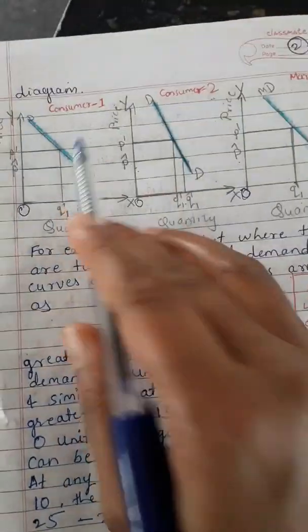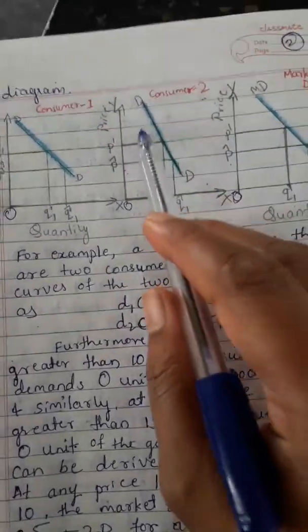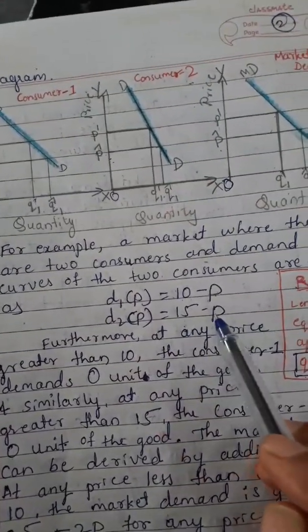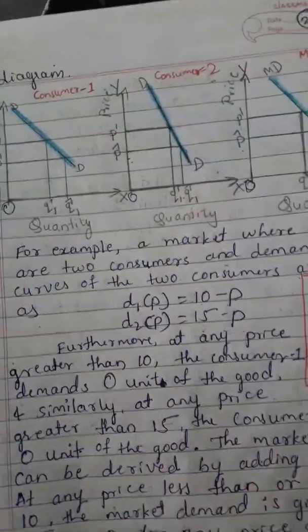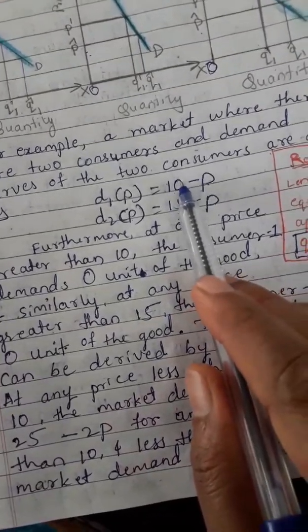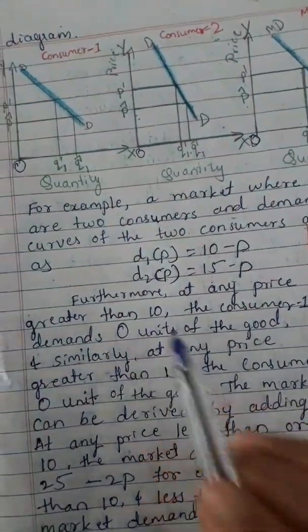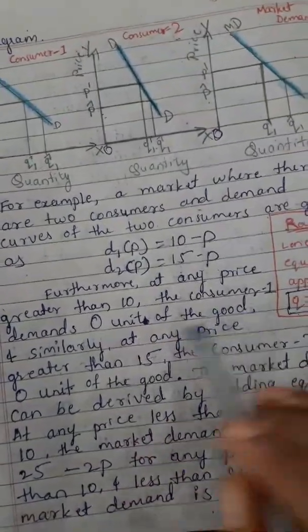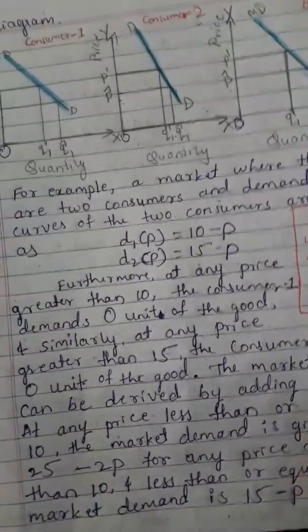For example, consumer one purchased 10 units. Consumer two purchased 15 units of the good. D2(P) = 15 minus P. At any price greater than 10, consumer one demands zero units of the good, because the price is higher than his maximum willingness to pay of 10 rupees — he purchases zero quantity. Similarly, at any price greater than 15, consumer two also demands zero units.